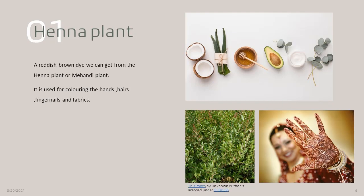Now children, the henna plant. A reddish-brown dye can be got from the henna plant, which is also known as the mehndi plant. It is used for coloring hands, hair, fingernails, and fabrics. During some special occasions, girls used to apply henna on their hands and legs too.